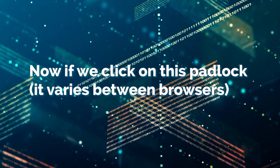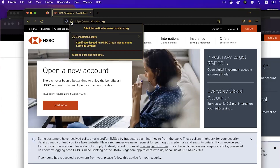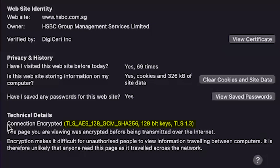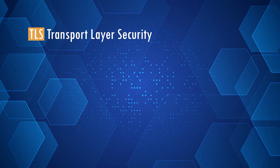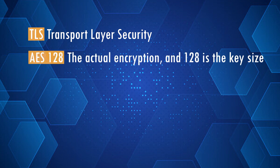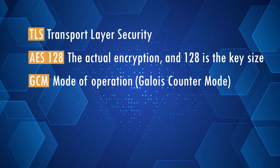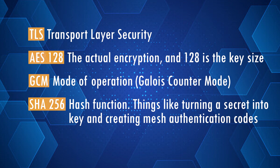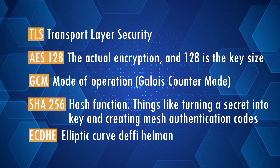If you click on the padlock in your browser, you can see something that looks like this: TLS, AES-128, GCM, SHA-256, 128-bit keys, TLS 1.3. Let's break it down. TLS is Transport Layer Security. AES-128 is the actual encryption cipher, and 128 is the key size. GCM is the mode of operation. SHA-256 is the hash function — used for things like turning a secret into a key and creating a message authentication code. By the way, instead of AES, it can be RSA or ECDHE — Diffie-Hellman elliptic curve — which is mostly used today as it's more secure.